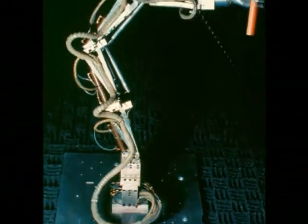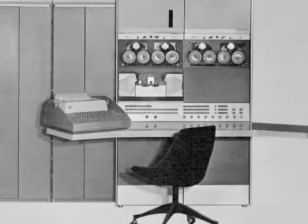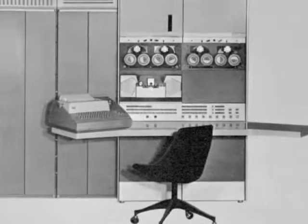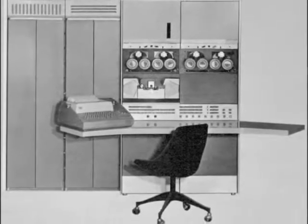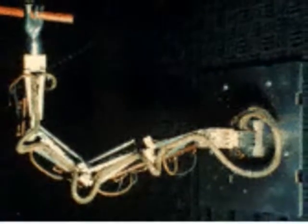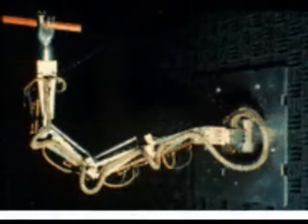In 1968, Marvin Minsky developed a tentacle arm which moved like an octopus. It had 12 joints designed to reach around things. The PDP computer controlled the arm, and it was powered by hydraulic flutes. It was also mounted on a wall and had enough power to lift a person.